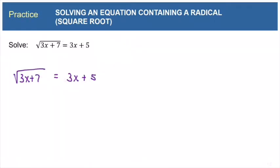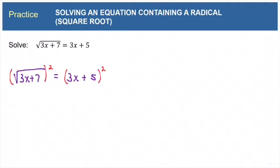Here is another radical equation: square root of 3x plus 7 equals 3x plus 5. We have a radical to get rid of, so we'll use the power property. Notice that the radical is already isolated on the left side of the equal mark, so we can just square both sides to eliminate the radical. When we square a radical, it removes the radical, and all we have on the left side is 3x plus 7. On the right side, we recognize this is a binomial, and when we square a binomial, we have to use the FOIL method.